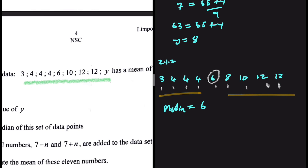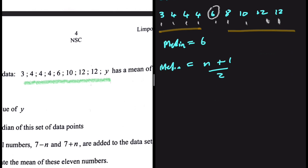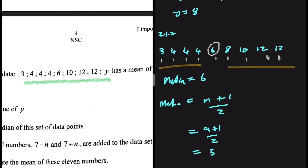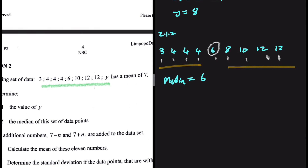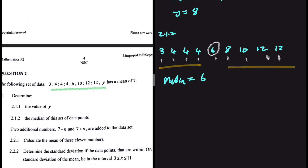We actually do have a formula for finding the position of the median. We can say that the median position is equal to (N + 1) divided by 2. In our case, N is 9, so that is 9 plus 1 divided by 2, which equals 5. So our median, with 9 data points, will be at the fifth position. That is how you find the position of the median for any data set.